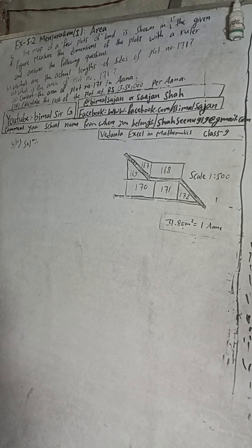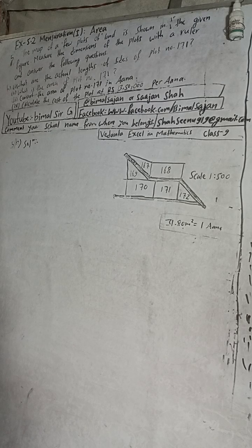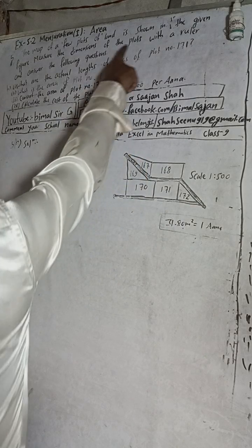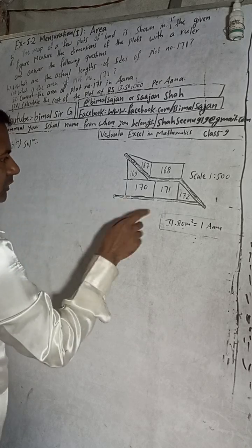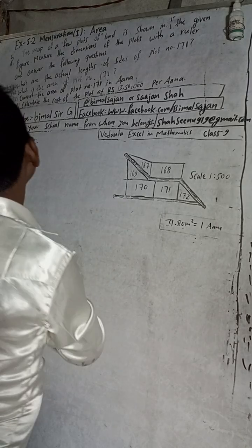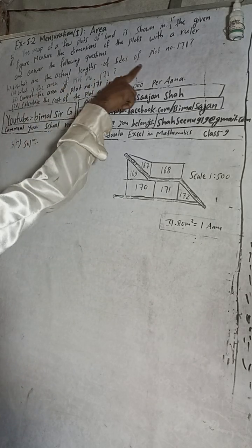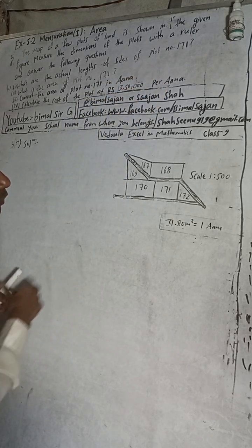Hi Class 9 and 10 students, welcome back to Bimal Sir's YouTube channel. This is Question Number 5B, Exercise 5.2, Mensuration. The question is: the map of a few plots of land is shown in the given figure. Measure the dimensions of the plot with the ruler and answer the following questions. What are the actual lengths of the sides of plot number 171?